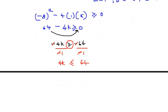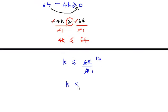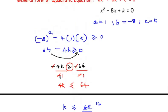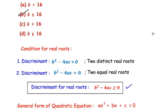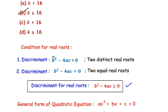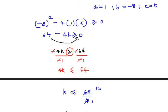Now we take 4 to the other side and get k ≤ 64/4, which is k ≤ 16. So the value of k is less than or equal to 16. Looking at the options, the answer is option B: k is less than or equal to 16. We used the discriminant condition for real roots — combining both distinct and equal cases — and by plugging in the values of a, b, and c we obtained k ≤ 16.